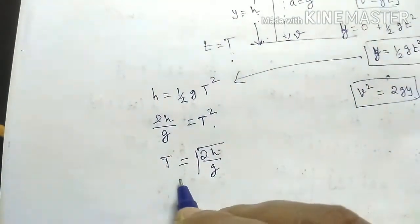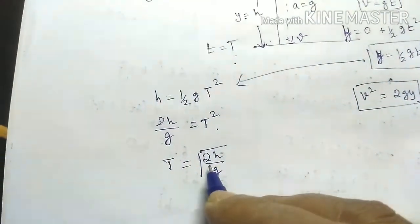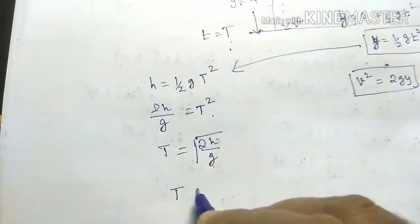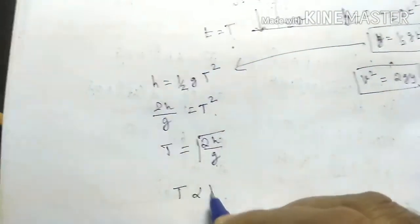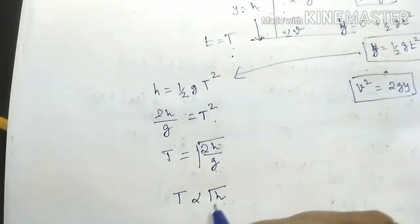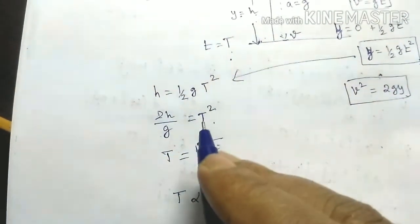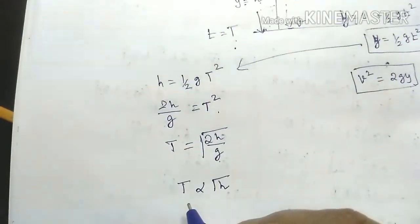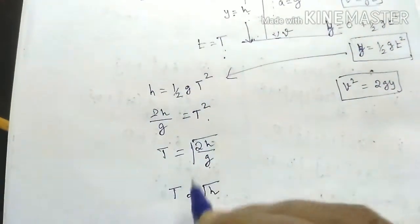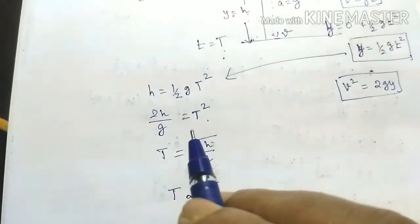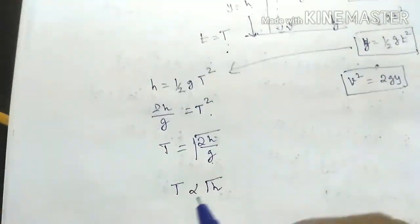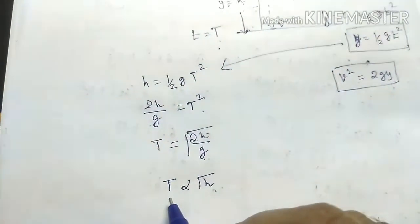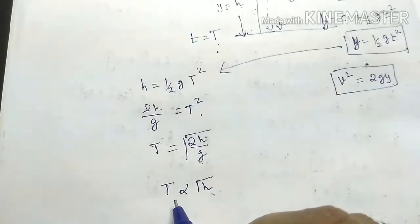Note that 2 and g are constants, so t is proportional to the square root of h. If the height is more, it takes more time to reach the ground. For lesser height, it takes less time to reach the ground.